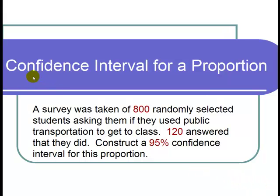This is a video on a confidence interval for a proportion. The question states, a survey was taken of 800 randomly selected students asking them if they use public transportation to get to class. 120 answered that they did. Construct a 95% confidence interval for this proportion.